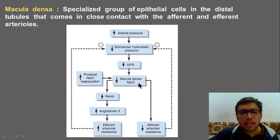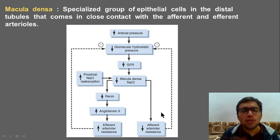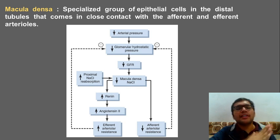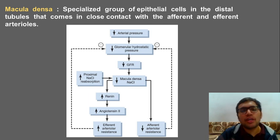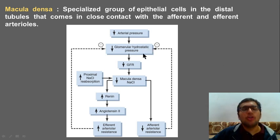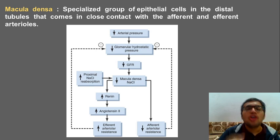The second mechanism: whenever less NaCl reaches the macula densa, this will decrease afferent arteriolar resistance. The theory behind it is that macula densa contains a Golgi complex and releases certain substances. With decreased afferent arteriolar resistance, more blood pumps in, GFR tries to increase, and again it has a negative feedback effect on glomerular hydrostatic pressure — saving your kidney.